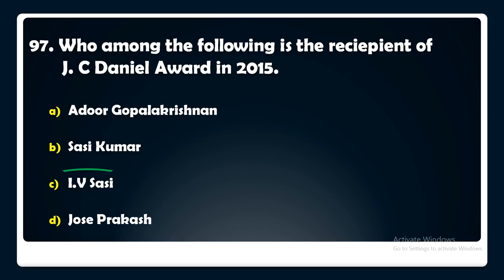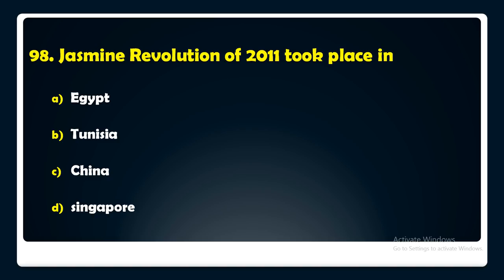The Jasmine Revolution of 2011 took place in — Egypt, Tunisia, China, or Singapore? The answer is: the Jasmine Revolution of 2011 took place in Tunisia.